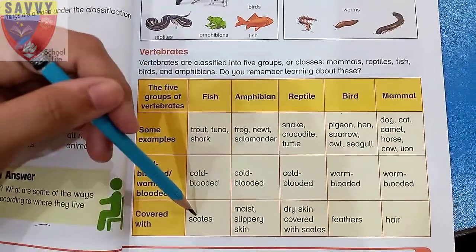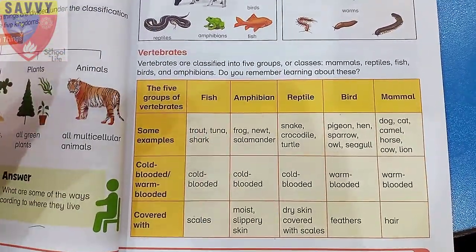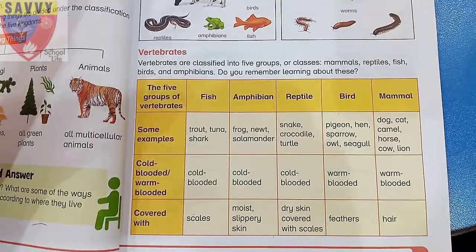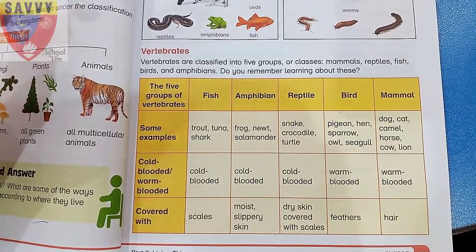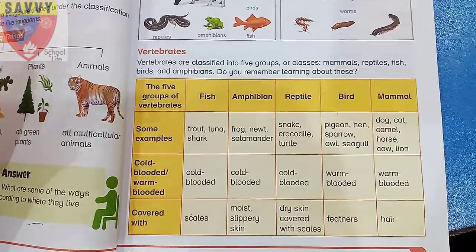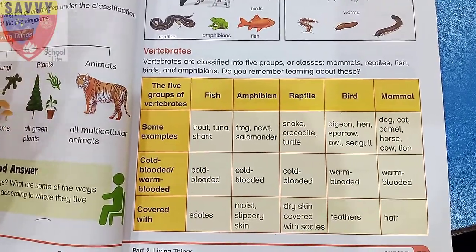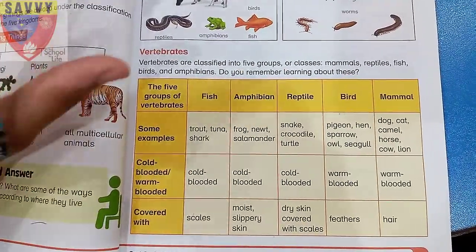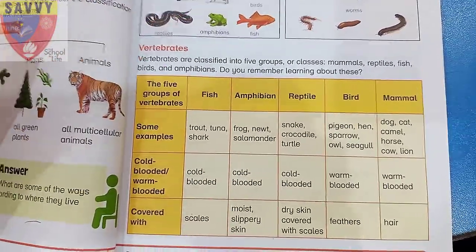Regarding body coverings: fish are covered with scales; amphibians have moist, slippery skin; reptiles have dry skin covered with scales; birds have feathers; and mammals have hair.